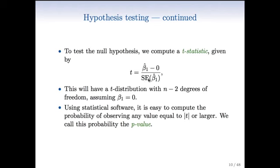In any case, you ask the computer to compute the p-value based on this statistic. The p-value is the probability of getting the value of t at least as large as you got in absolute value.